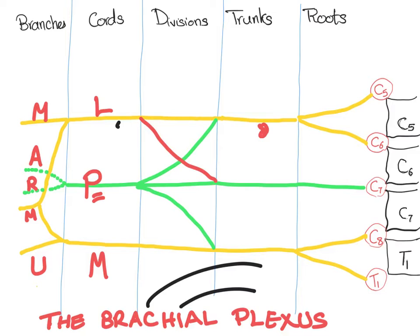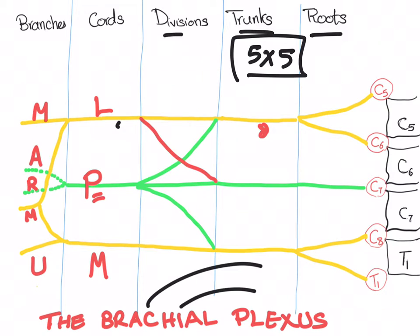How to memorize everything you need to know about the brachial plexus? It's easy. It's five times five. How come? We have five segments, or five parts: roots, trunks, divisions, cords, branches. Just remember the tree. In every single part, there are five things you need to know.